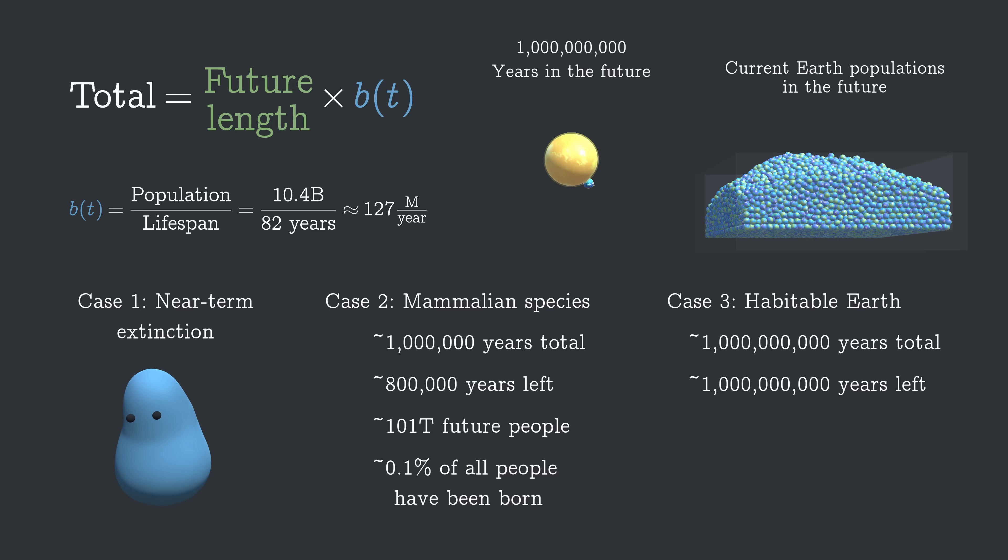127 million births per year for 1 billion years leads to 127 quadrillion future people. I really don't think it's possible to actually grasp how big that number is, let alone the fact that each one of them is potentially a human life, but it can be fun to try. 127 quadrillion is almost 16 million times Earth's current population.